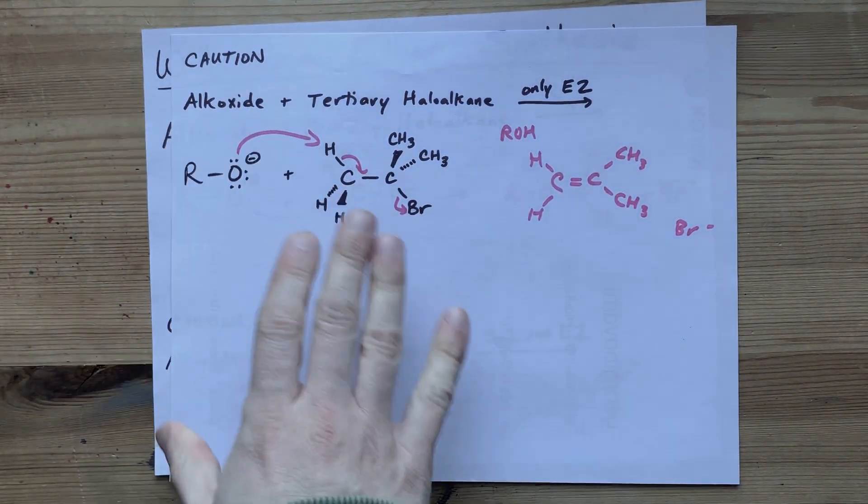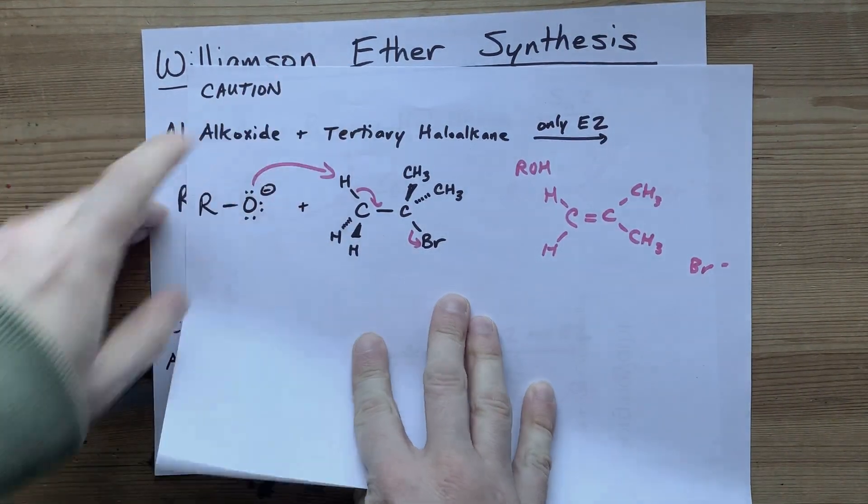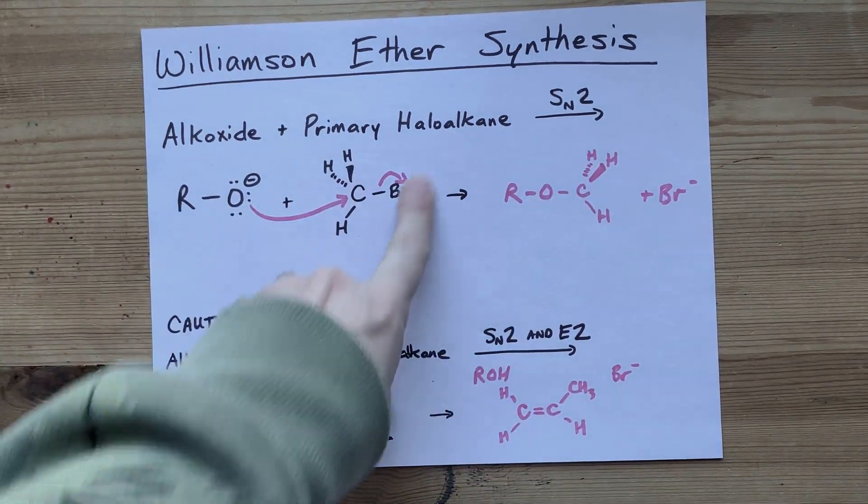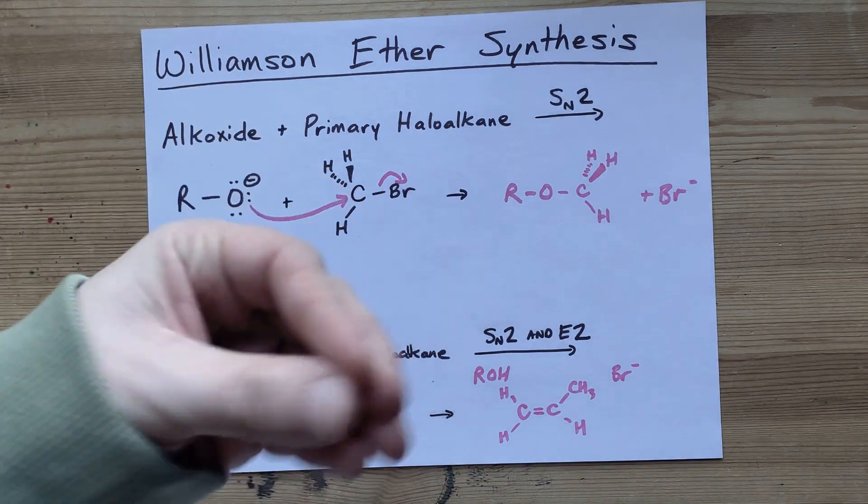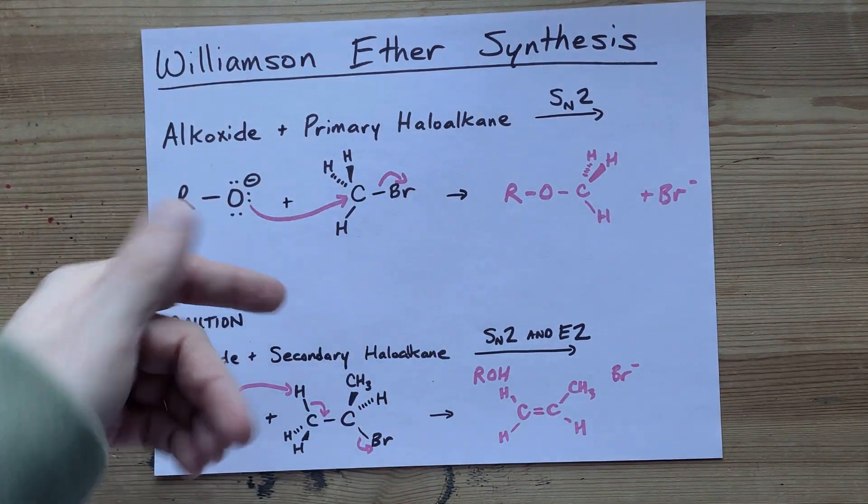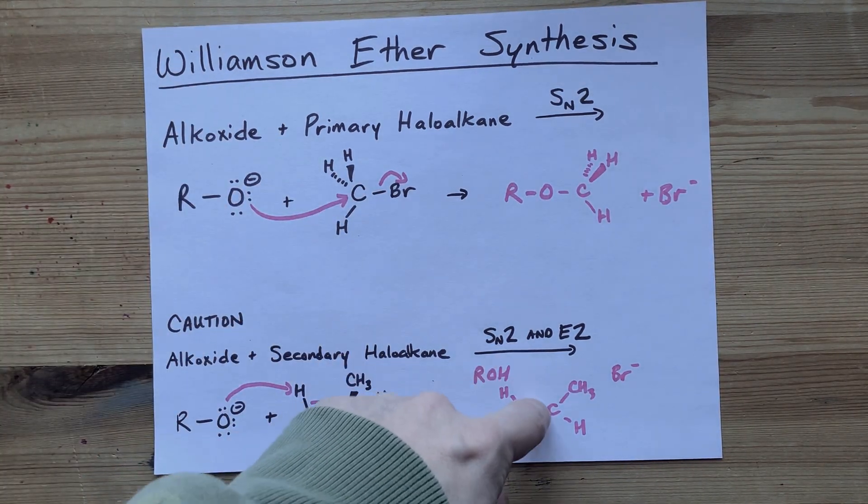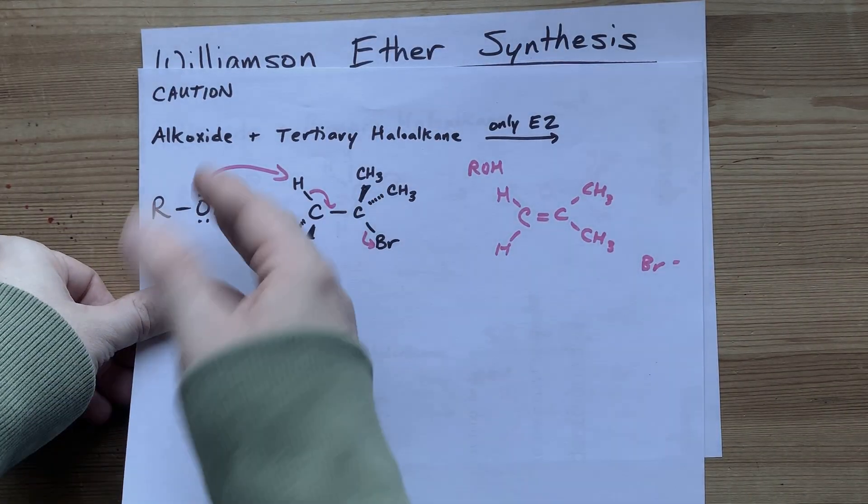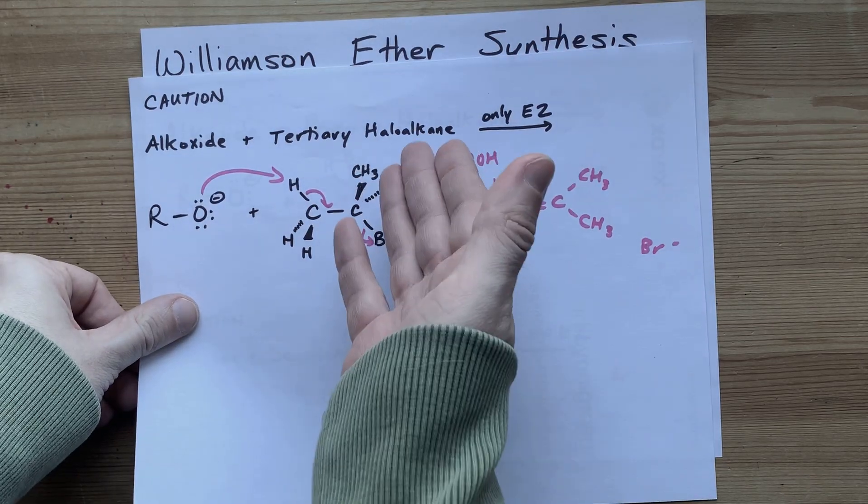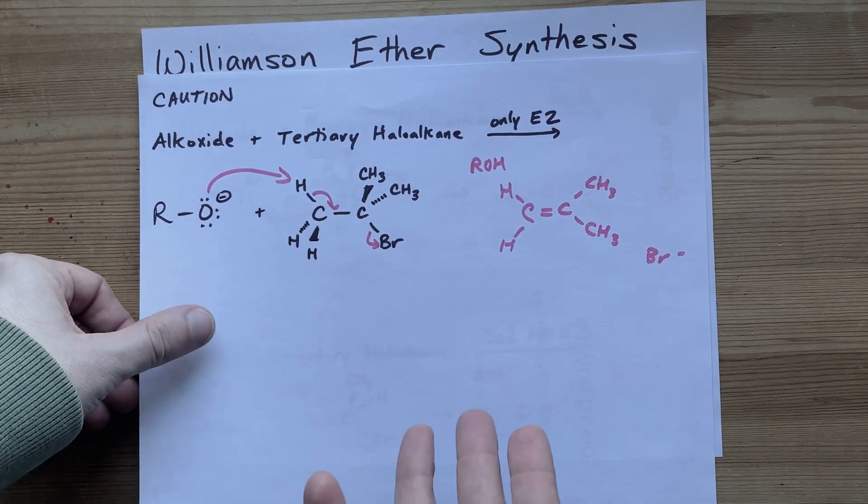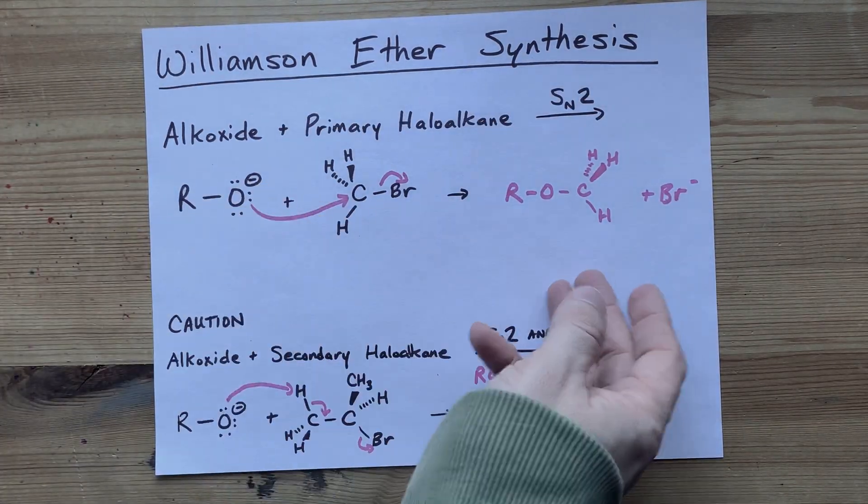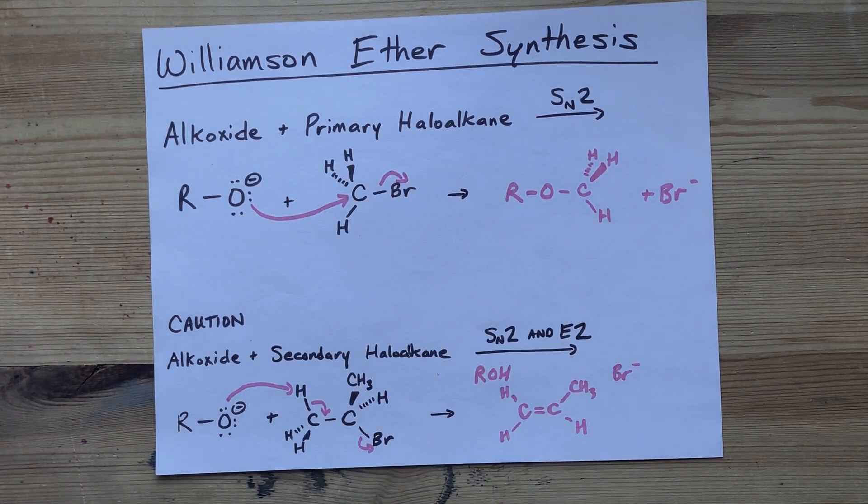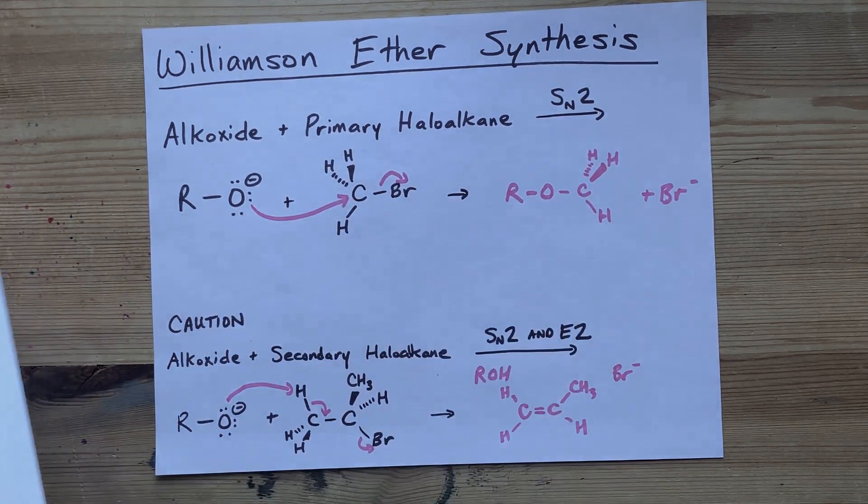That was all just like extra detail here. The Williamson ether synthesis to actually form an ether is best to use primary haloalkanes. You can create the ether from a secondary alkane but you're going to get other byproducts. And by the time you get to a tertiary haloalkane you're not going to get any ether. So why call it an ether synthesis at that point? Hey, I hope that made sense to you, explaining why it works for some and why it doesn't work for others. And best of luck.